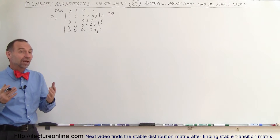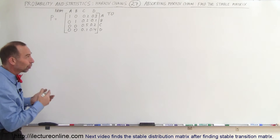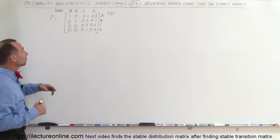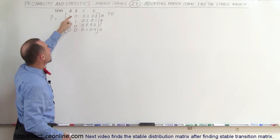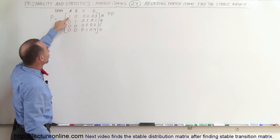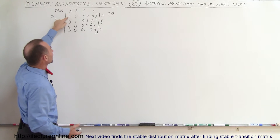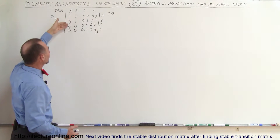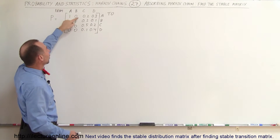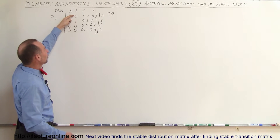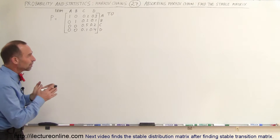Welcome to Electronline. Here's another example of how to find a stable matrix when you have an absorbing Markov chain. You can tell you have an absorbing Markov chain because for states A and B, all of the population of state A remains with state A and none goes to B, C, or D. Similarly, all of the population of B stays with B and none goes to A, C, or D. That is a good indicator that you have an absorbing Markov chain.